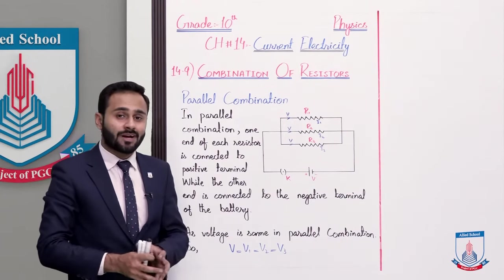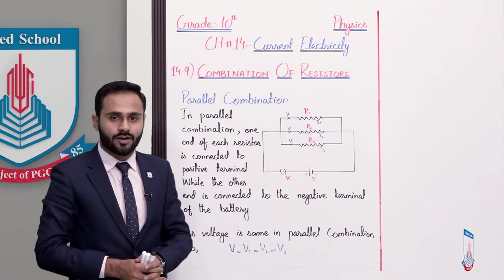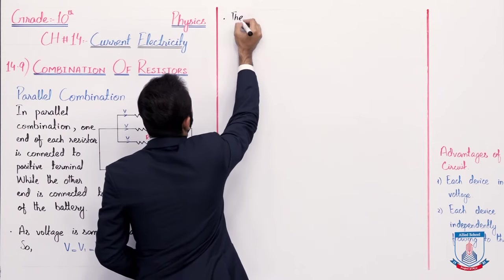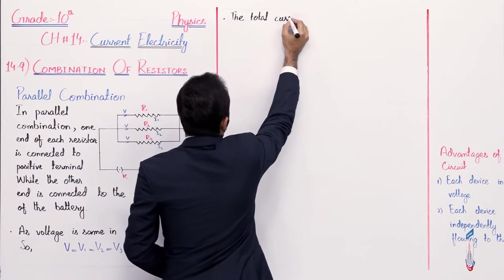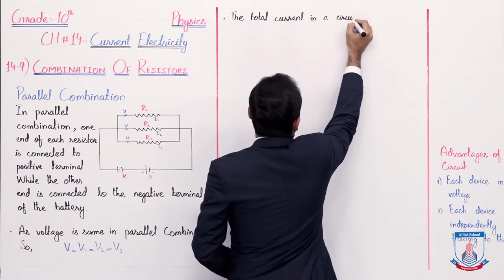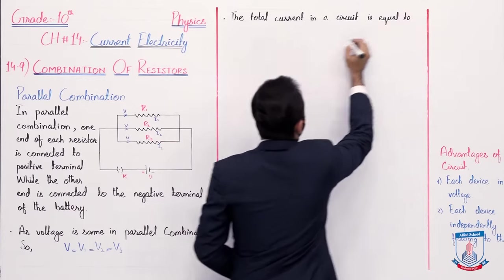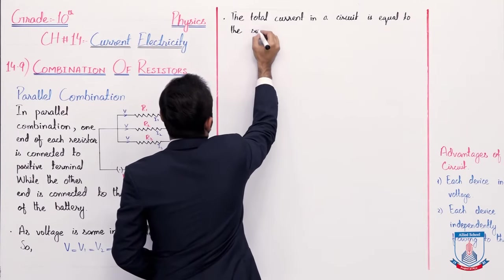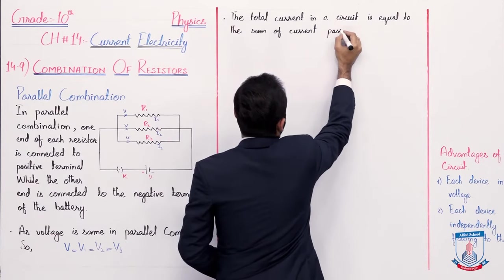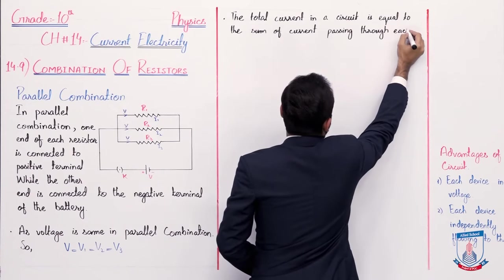So agar hum is circuit mein total current find karna ho, toh hum kya karenge? Hum in teeno current ko add up karenge. Jisse is circuit ka total current aa jayega. So the total current in a circuit, in a parallelly combined circuit, is equal to the sum of current passing through each resistor.